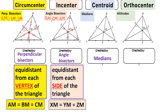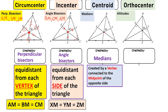Next we have the centroid, which is created by medians. Medians are created by connecting a vertex to the midpoint of the opposite side. Our medians here are BZ, CX, and AY. For example, BZ starts at vertex B and goes to the opposite side, cutting AC into two equal parts as shown by the congruence marks — that makes it a median.